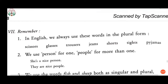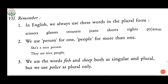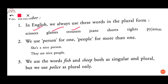Now come to the second question — question seven. Remember, first point: in English we always use certain words in the plural form. Singular means if we are talking about one person, and plural means more than one. A few words are always used in the plural form. Examples given are: scissors, glasses, trousers, jeans, shorts, tights, and pajamas. All these words we can use only in the plural form.